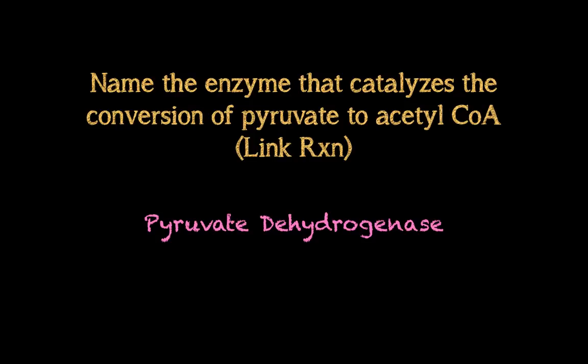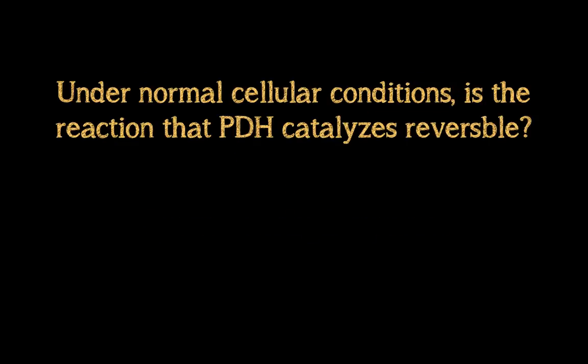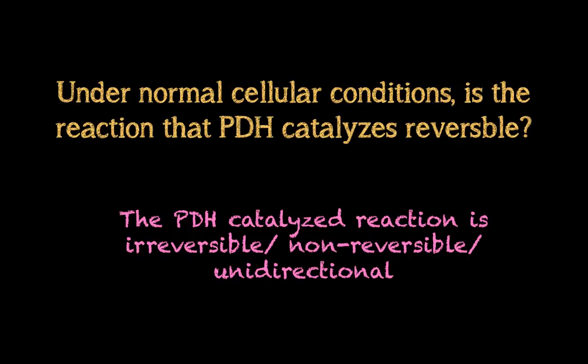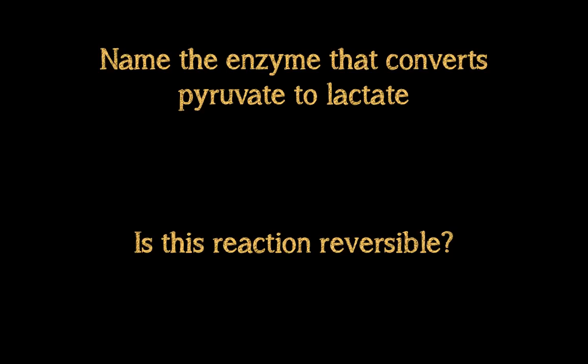If you got those correct so far, great. If not, go look at your notes. Next question: under normal cellular conditions, is the reaction that pyruvate dehydrogenase catalyzes reversible? When writing the equation for this reaction, do you put a reversible arrow or a one-directional arrow? The answer is that the PDH — pyruvate dehydrogenase — catalyzed reaction is irreversible: non-reversible, unidirectional, going only in one direction.